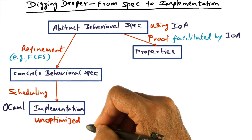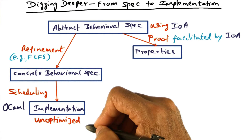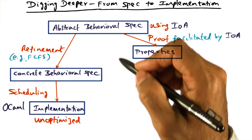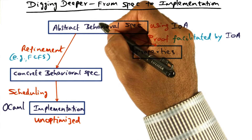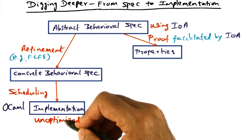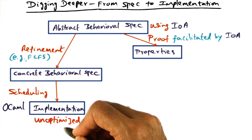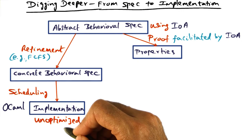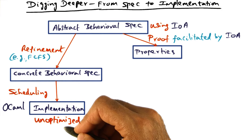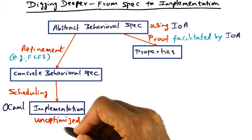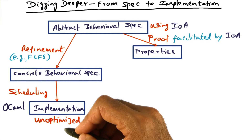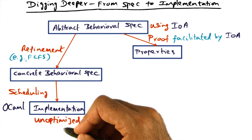At this point, what we have is an unoptimized version of the abstract behavioral spec — implemented and ready to run, but it is unoptimized. Remember that it's component-based design. There's going to be a lot of cruft that is going to be there in terms of the interfaces between the components that have been assembled together to build a complex system.